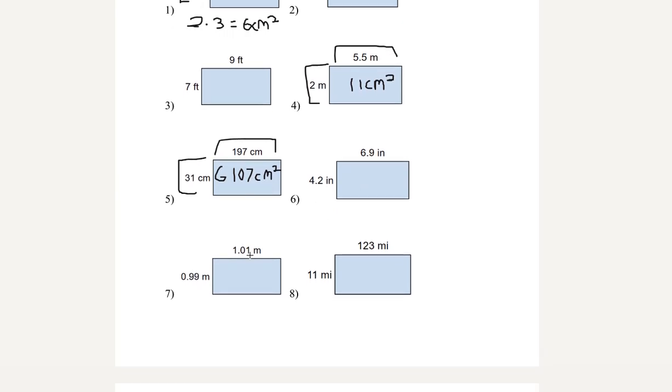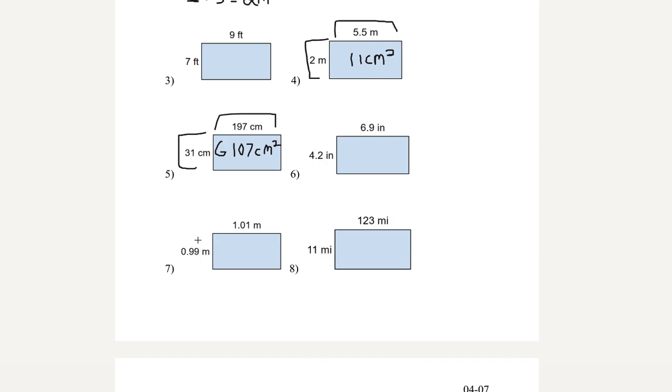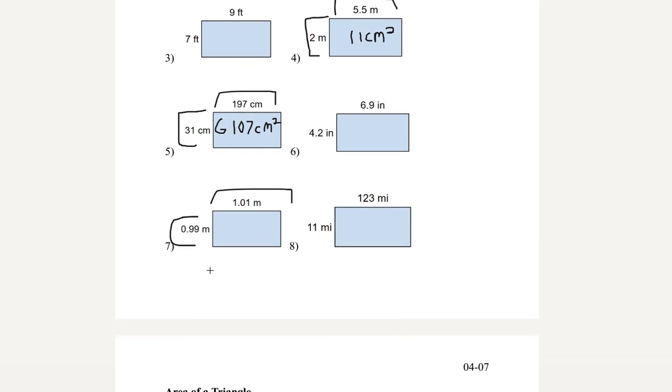Okay, let's do number 7 real quick. We have 0.99 and then 1.01. Let's multiply those two. And then we'll get 0.999 meters squared.